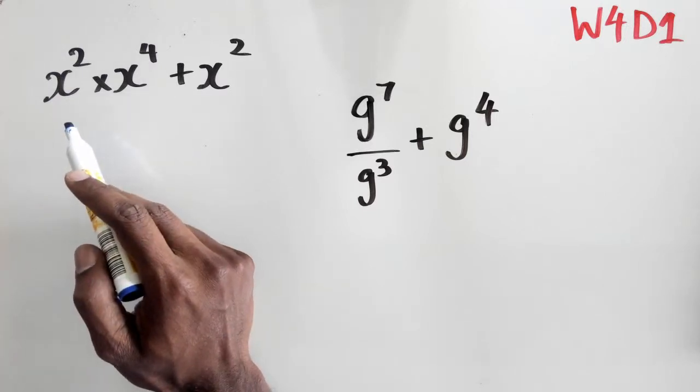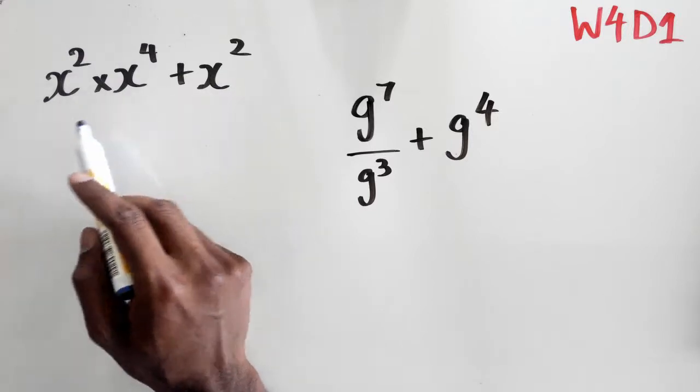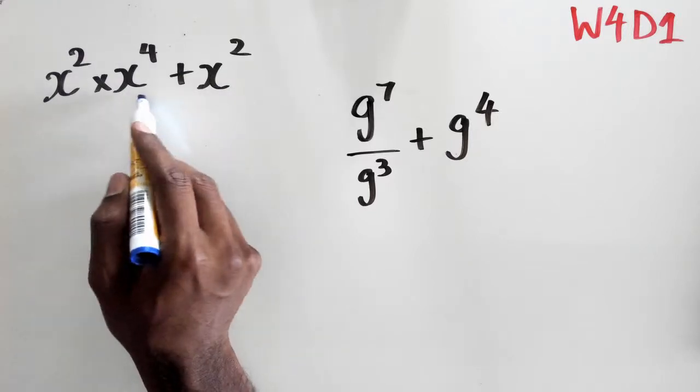What we have is x squared multiplied with x to the power of 4, plus x squared. Now, remember according to the rules of BEDMAS, you've got to do multiplication first.